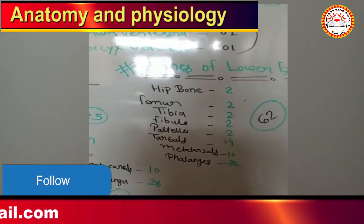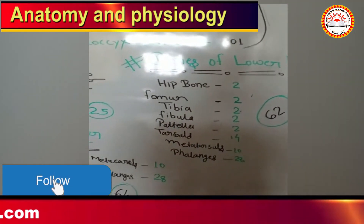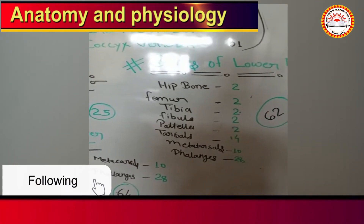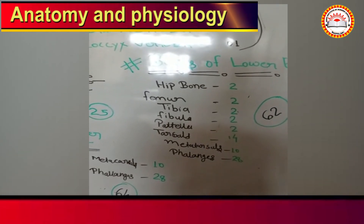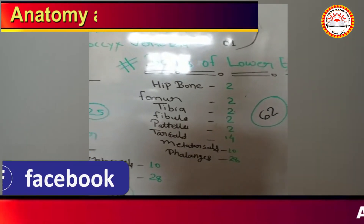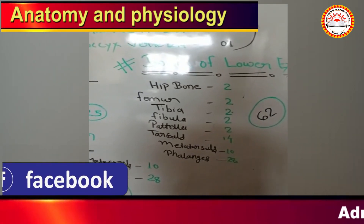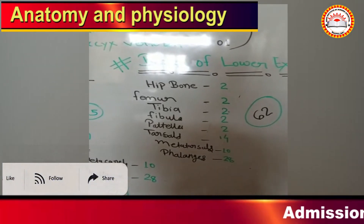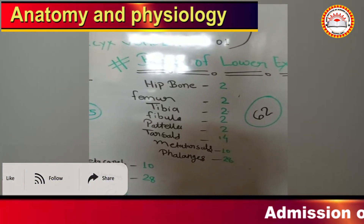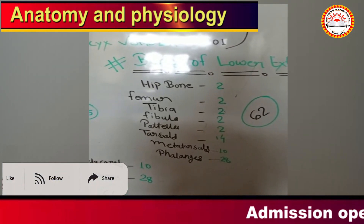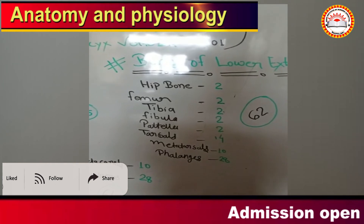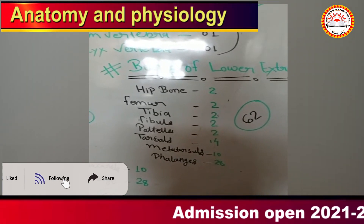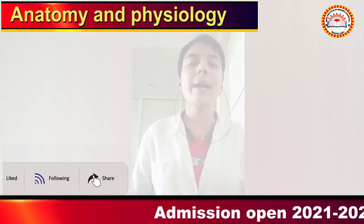Bones of the lower extremities: hip bone 2, femur 2, tibia 2, fibula 2, patella 2, tarsals 14, metatarsal 10, and phalanges 28. Total number of 62 bones in the lower extremities.